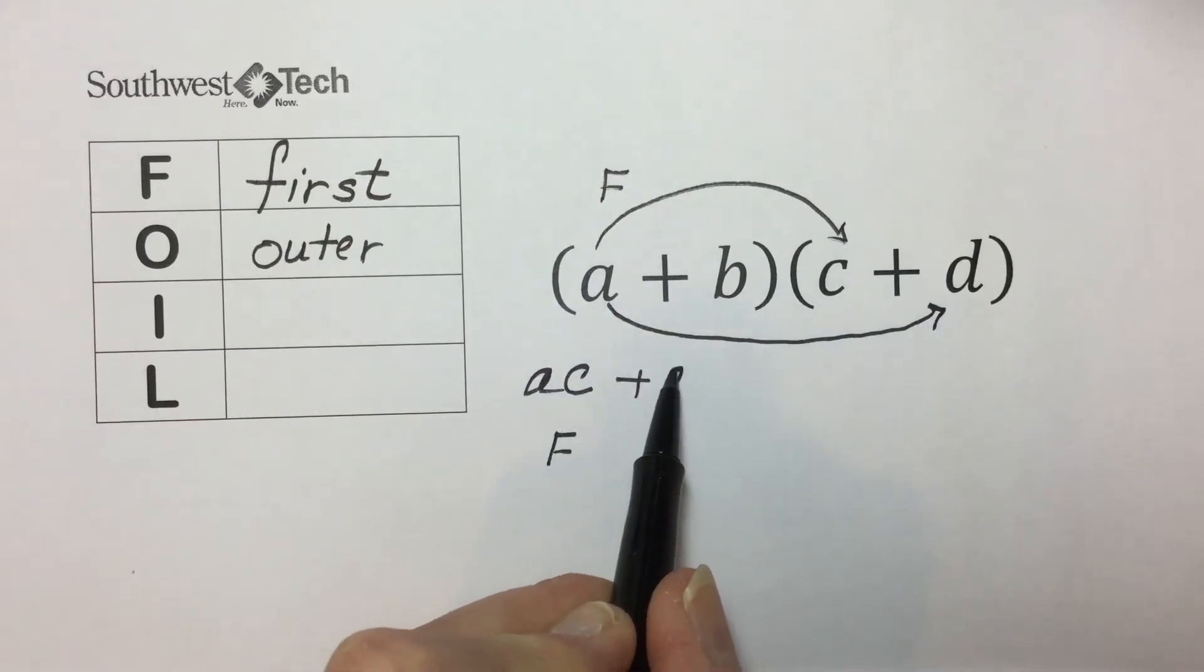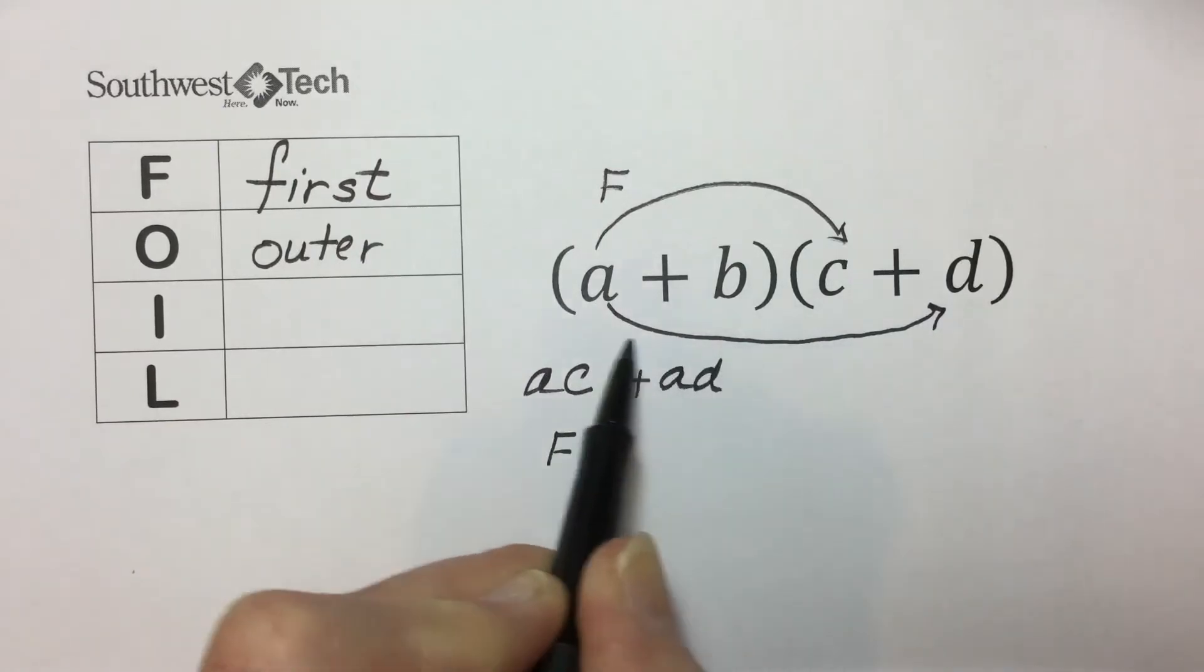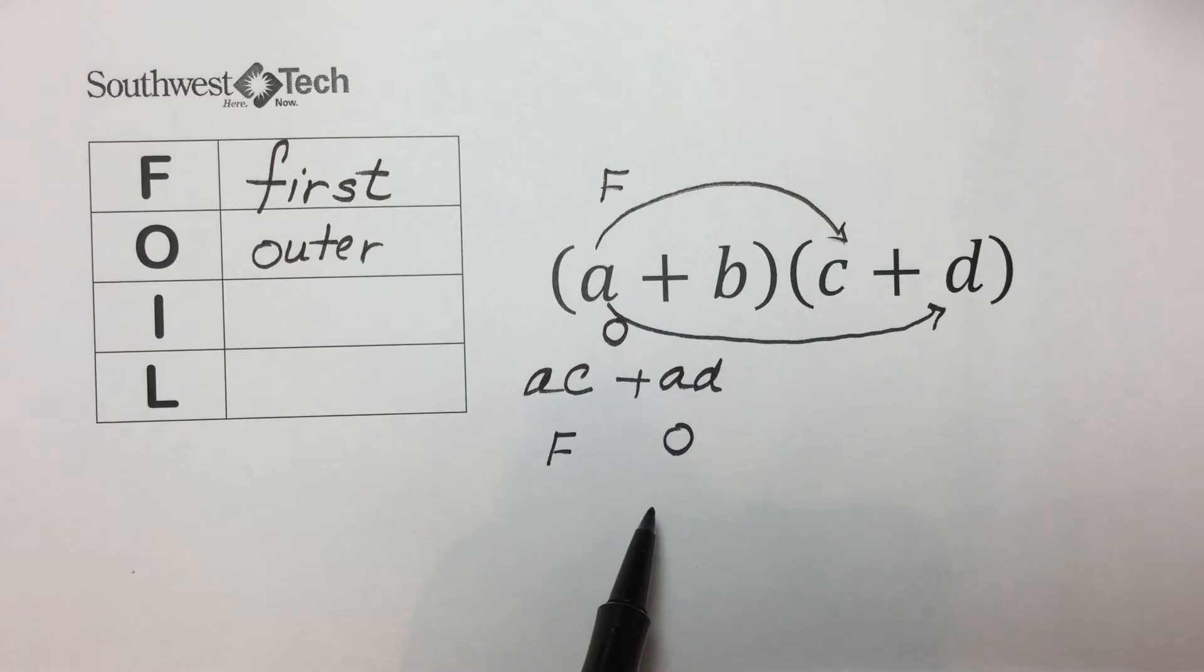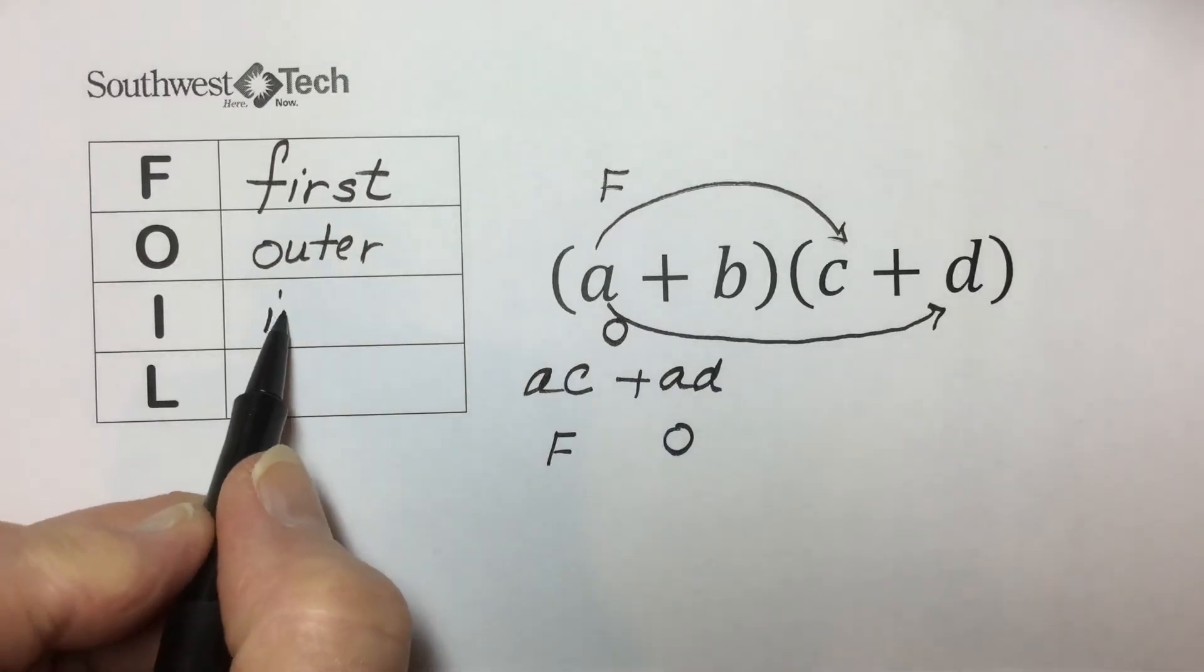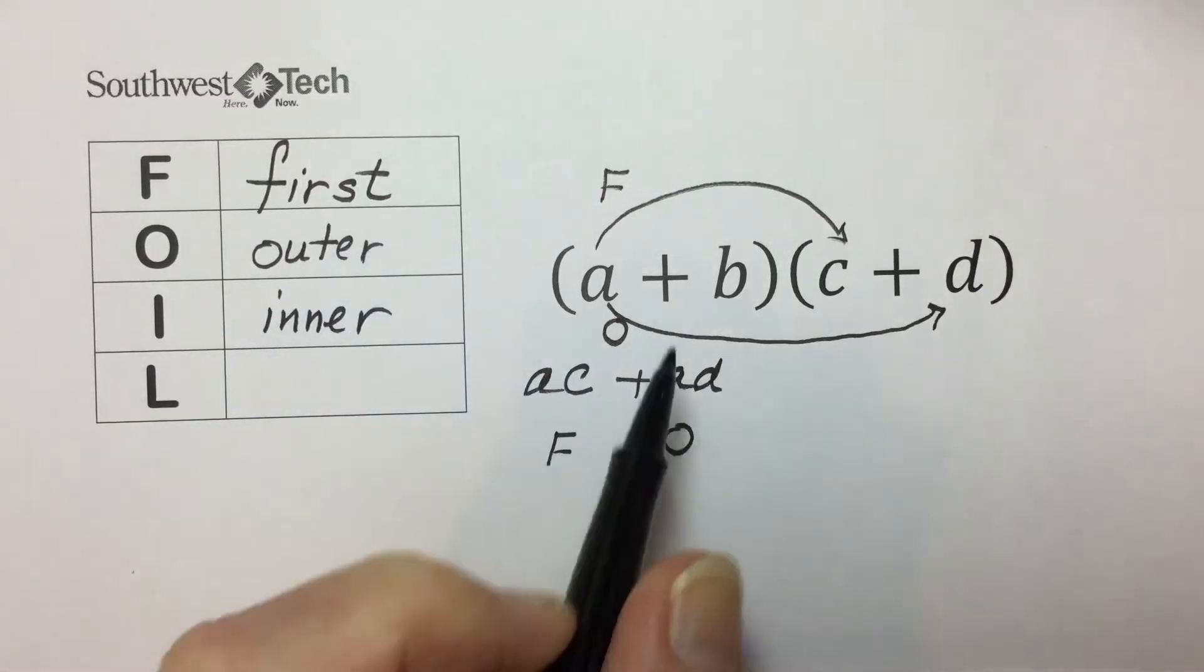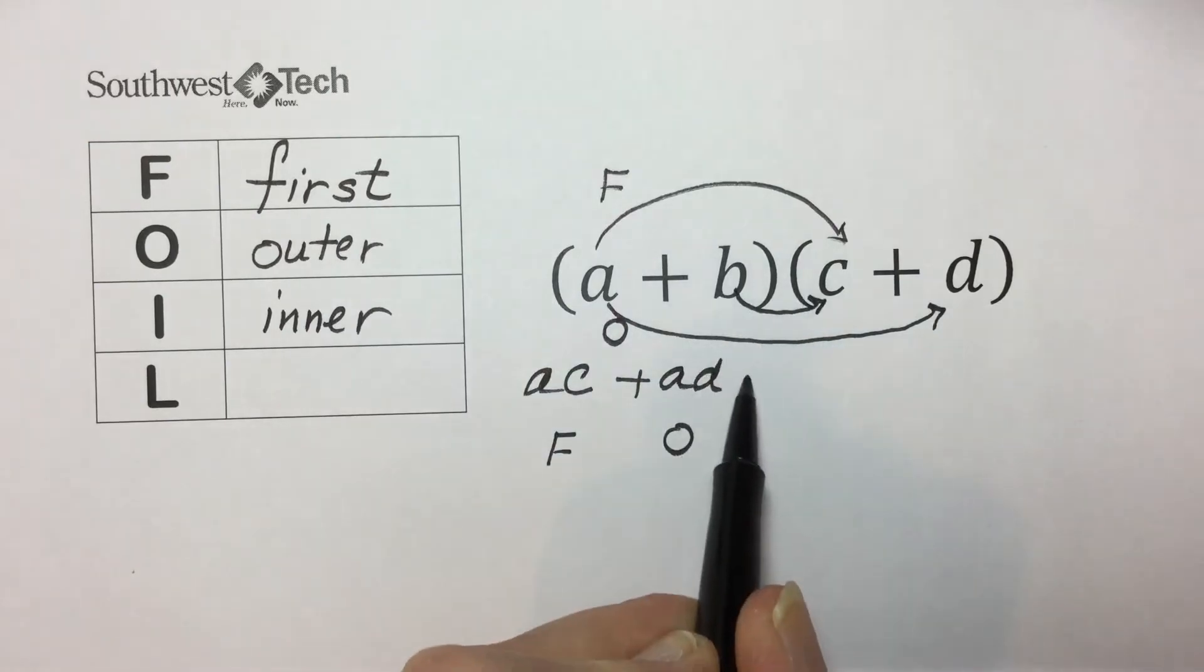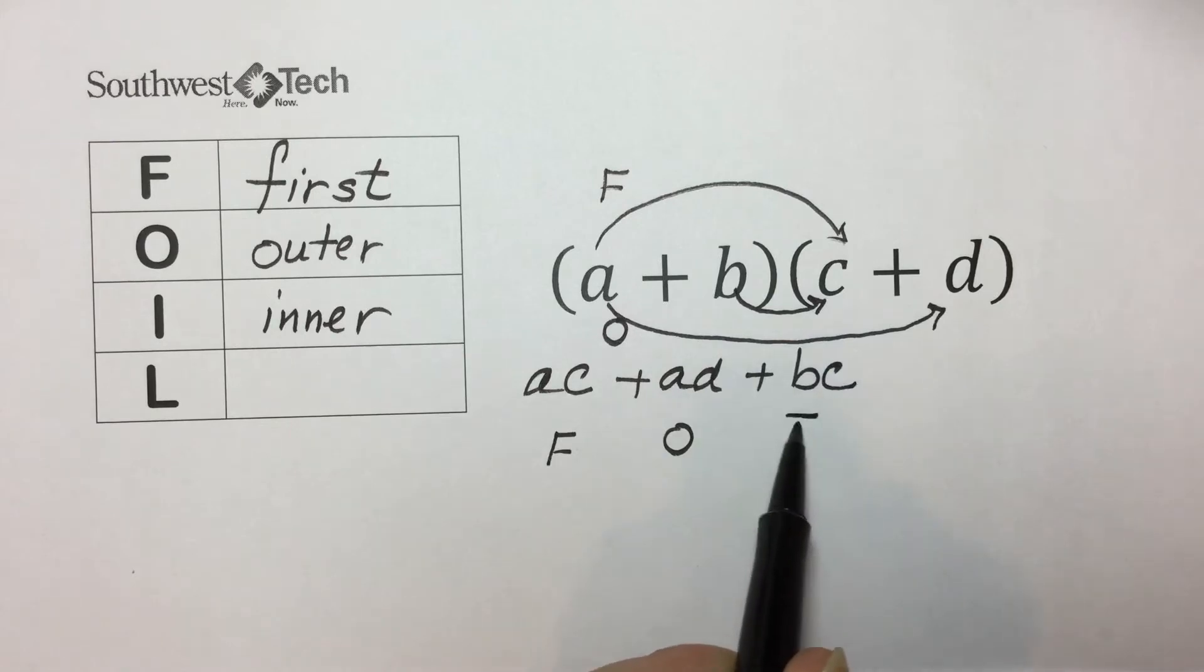A times D is the result of our outer terms multiplied together. I is for the inner terms, and the inner terms multiplied together would be here, B times C.